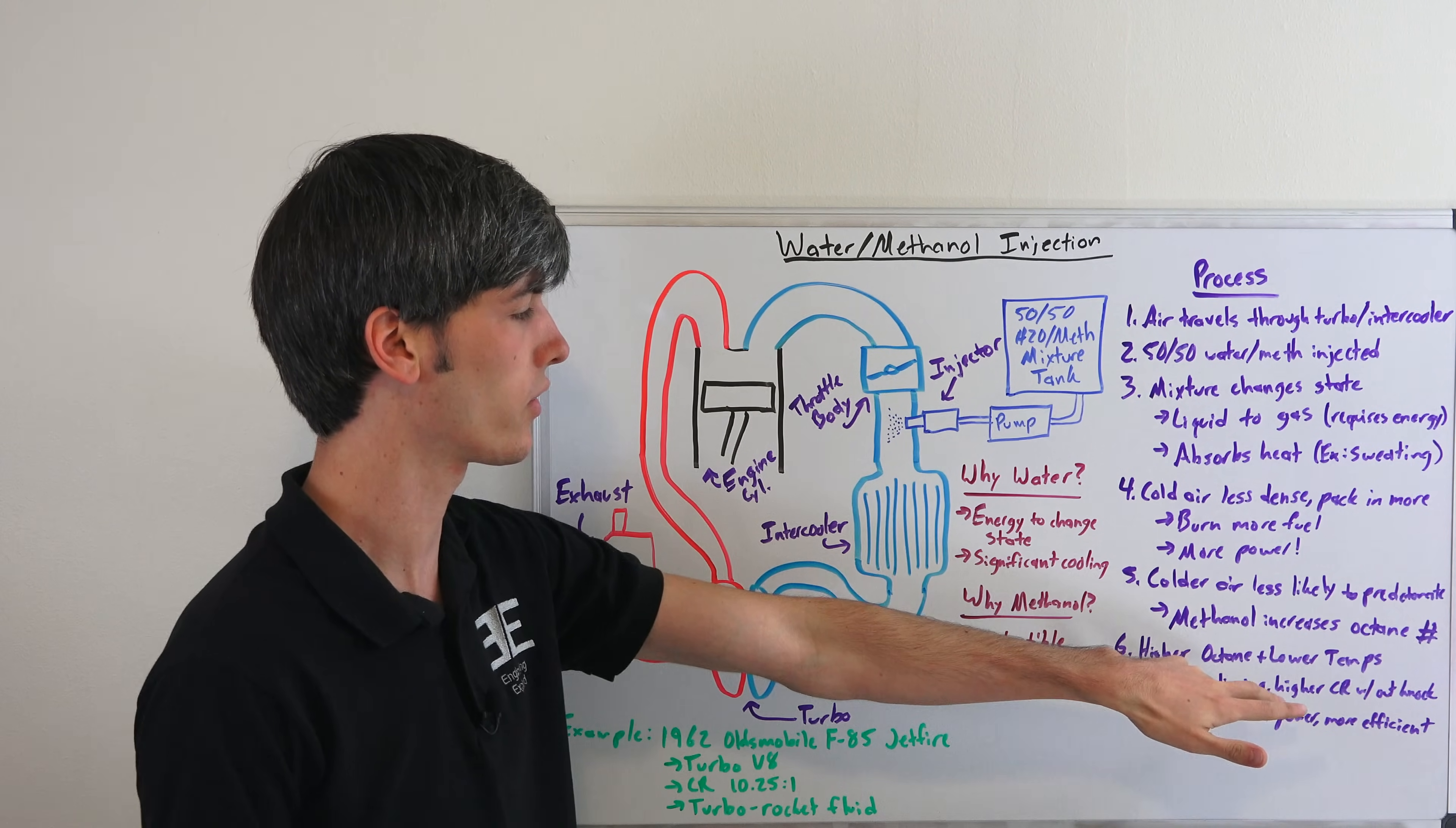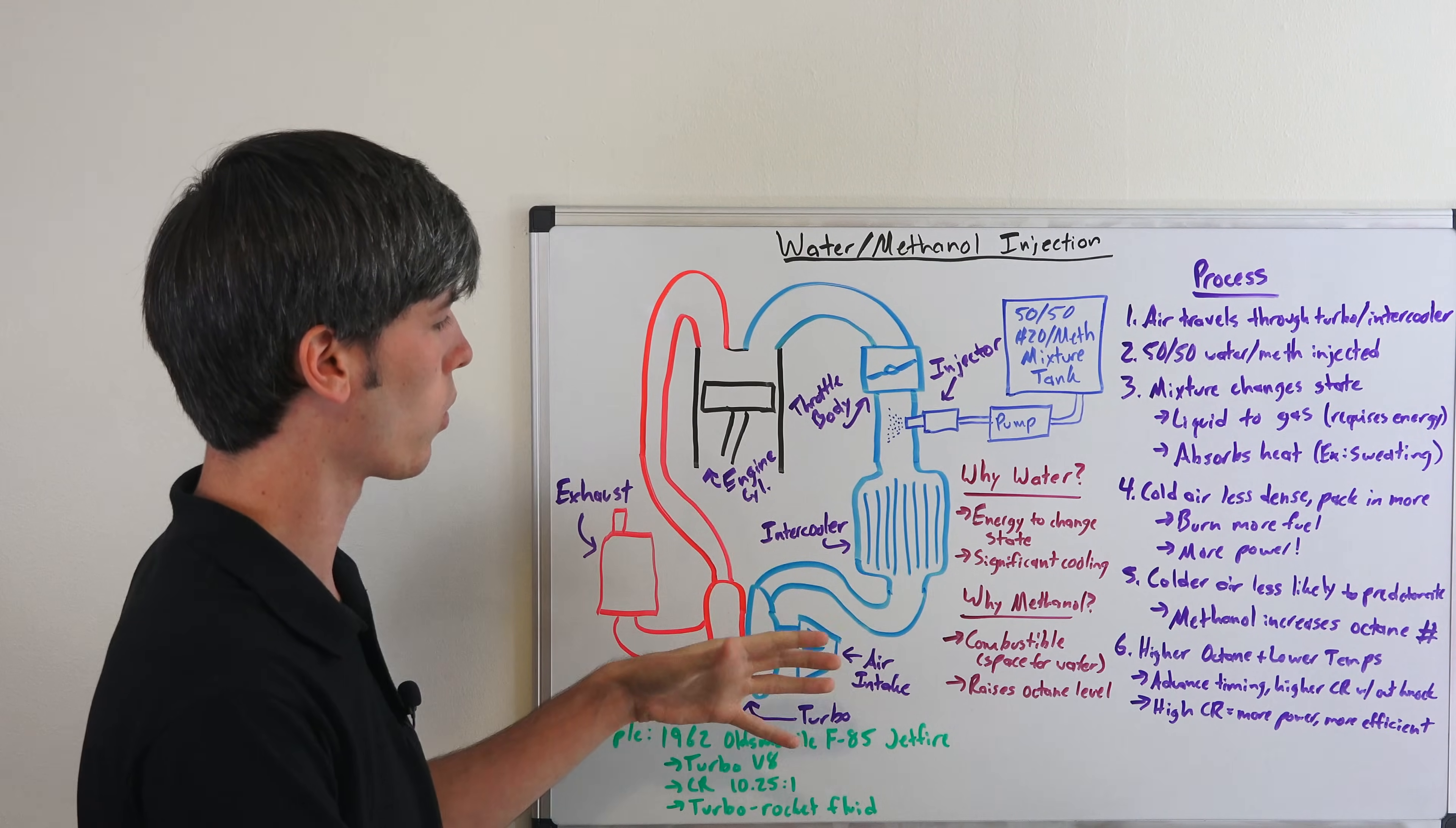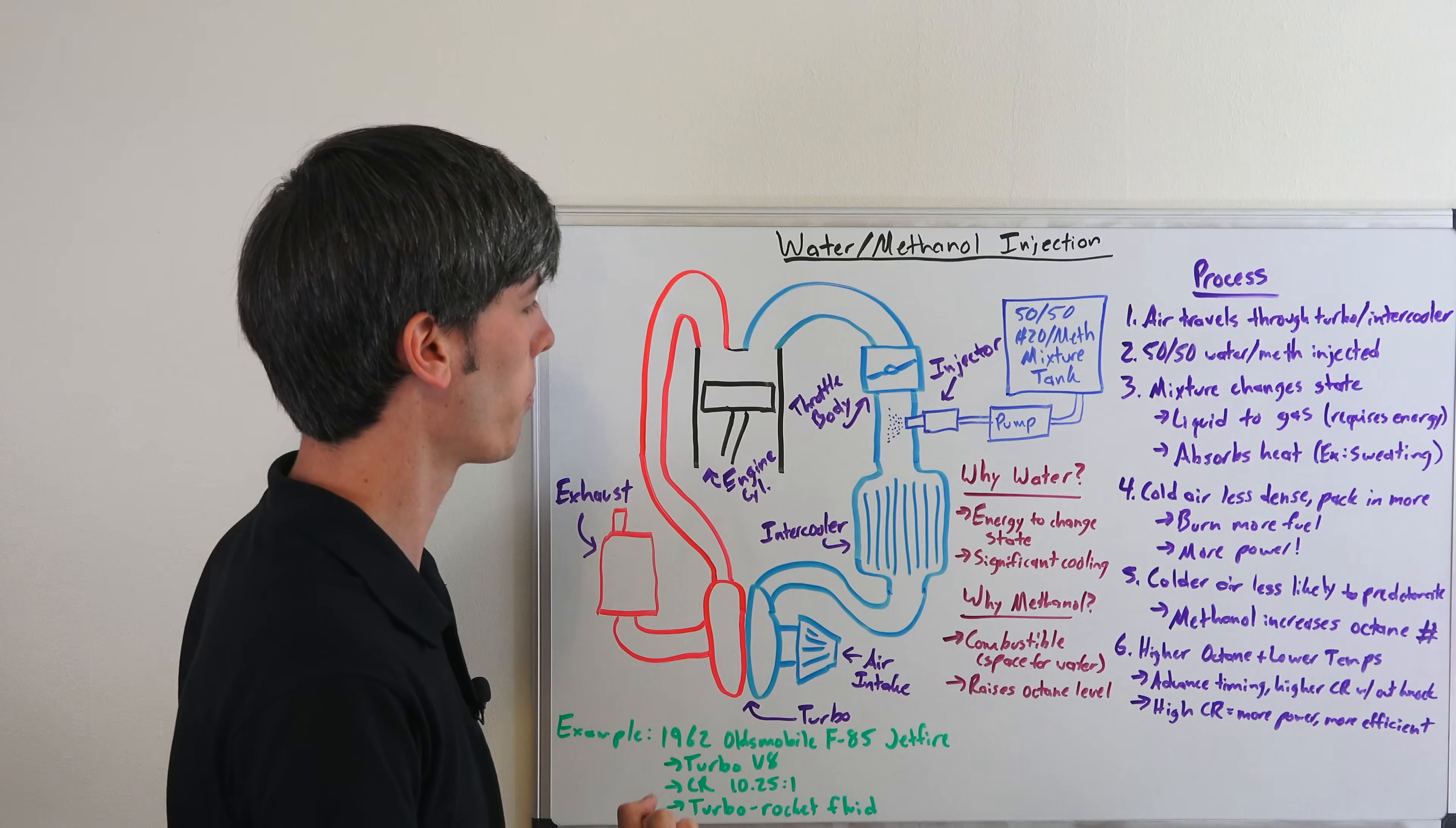If you don't quite understand how that advanced timing works and the octane rating, I have a bunch of links and videos in the description explaining how those work. But essentially what you're doing is you're decreasing the temperature of the mixture, you're increasing the octane level, and in doing so you can advance the timing, use higher compression ratios, and create more power.